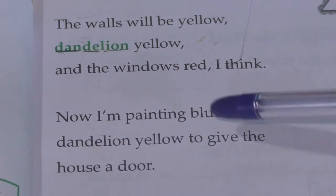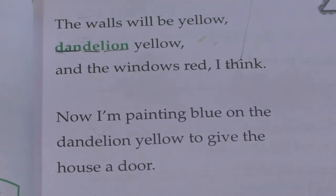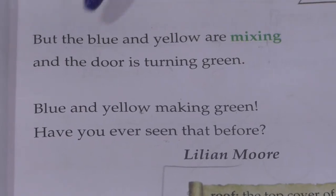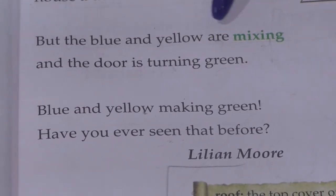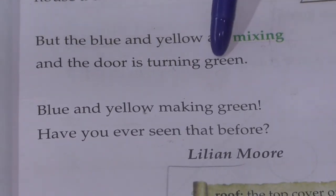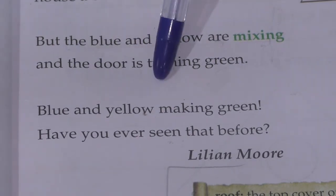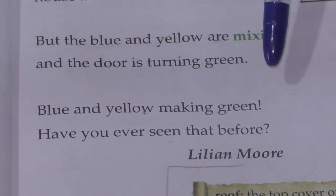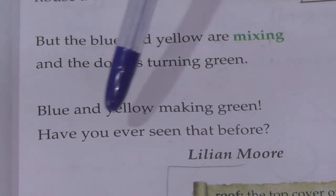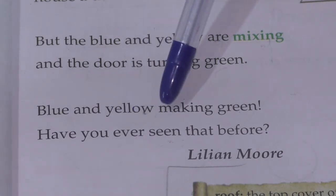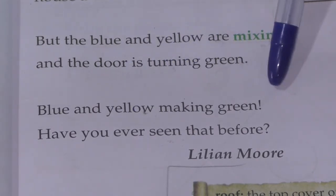But the blue and yellow are mixing, and the door is turning green. Blue and yellow making green — have you ever seen that before? So children, I hope you understood the poem really well.